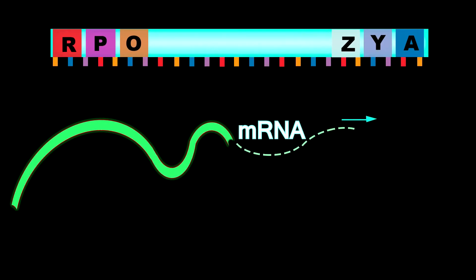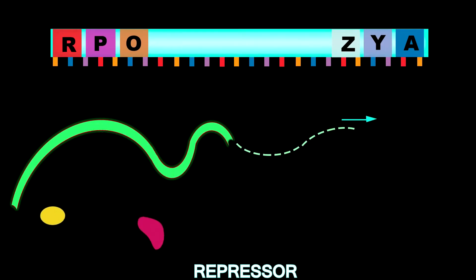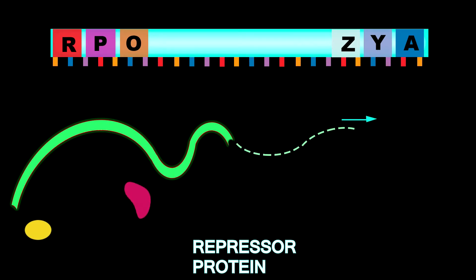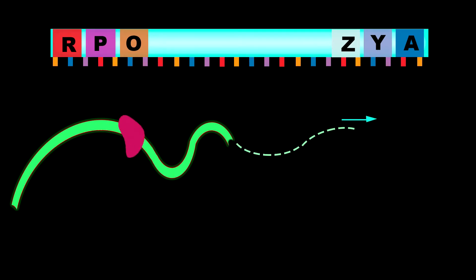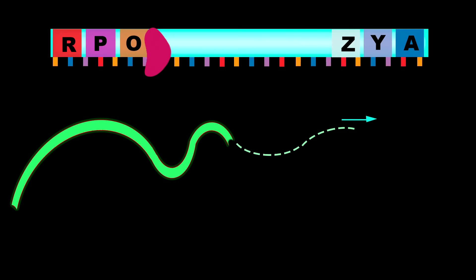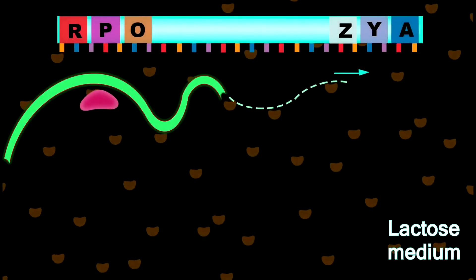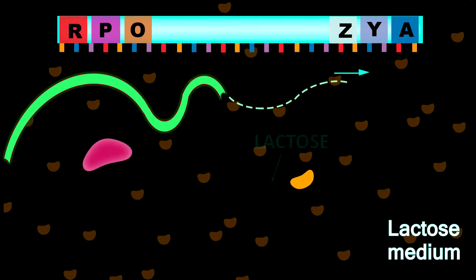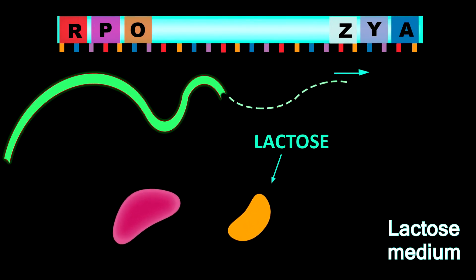This mRNA produces some repressor proteins and some other proteins. These repressor proteins block the operator gene of the operon and mRNA synthesis is stopped. In lactose medium, this repressor protein is repressed by the lactose of the lactose medium.